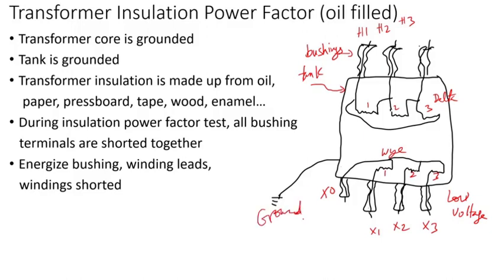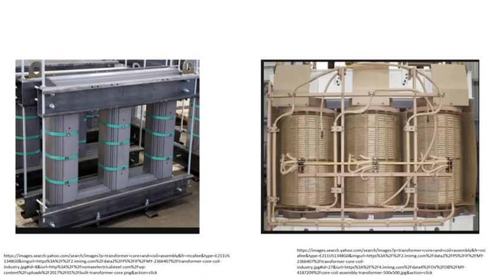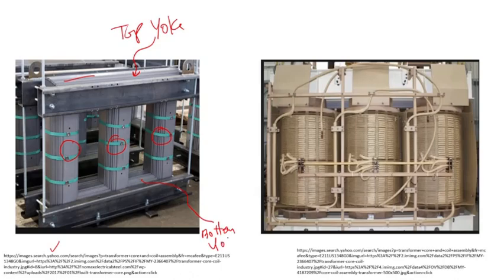I have a picture here showing the core structure. You have core limb one, core limb two, and core limb three — this is a three-limb core. Then you have the yokes: the top yoke and the bottom yoke. The yokes connect the limbs because the core has to be a complete circuit. You also have frames or core clamps to keep the core together, because it's laminated.